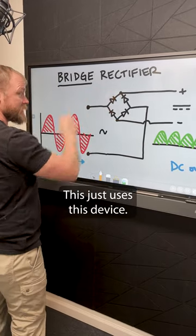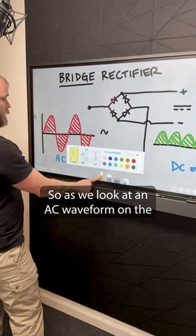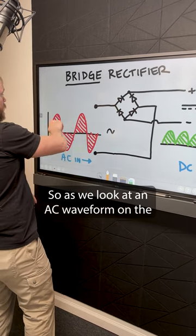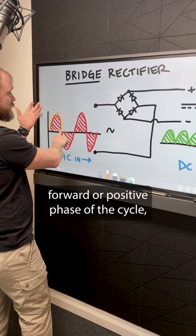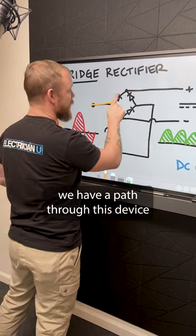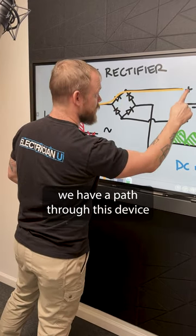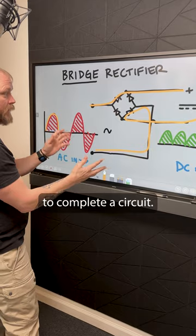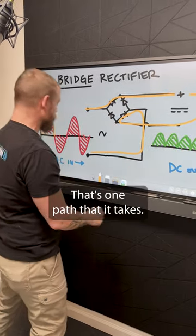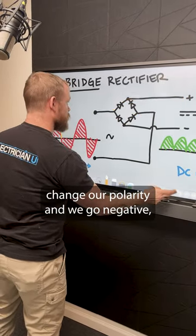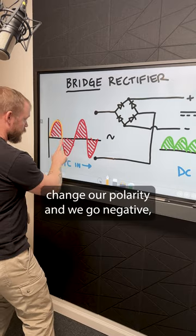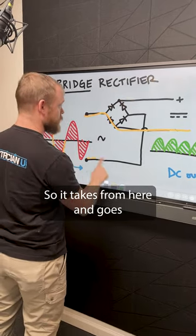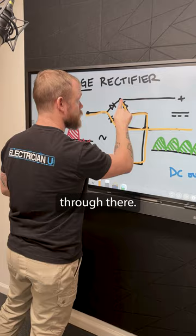This just uses this device. As we look at an AC waveform on the forward or positive phase of this cycle, we have a path through this device and all the way back through to complete a circuit — that's one path that it takes. Now when we change our polarity and go negative, we have a different path through the device, taking from here and going through there.